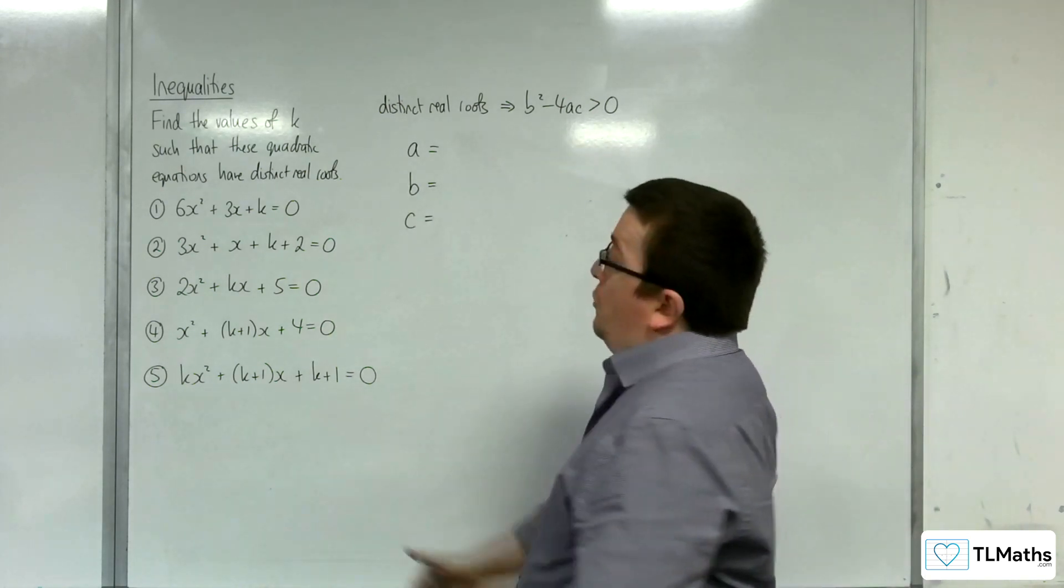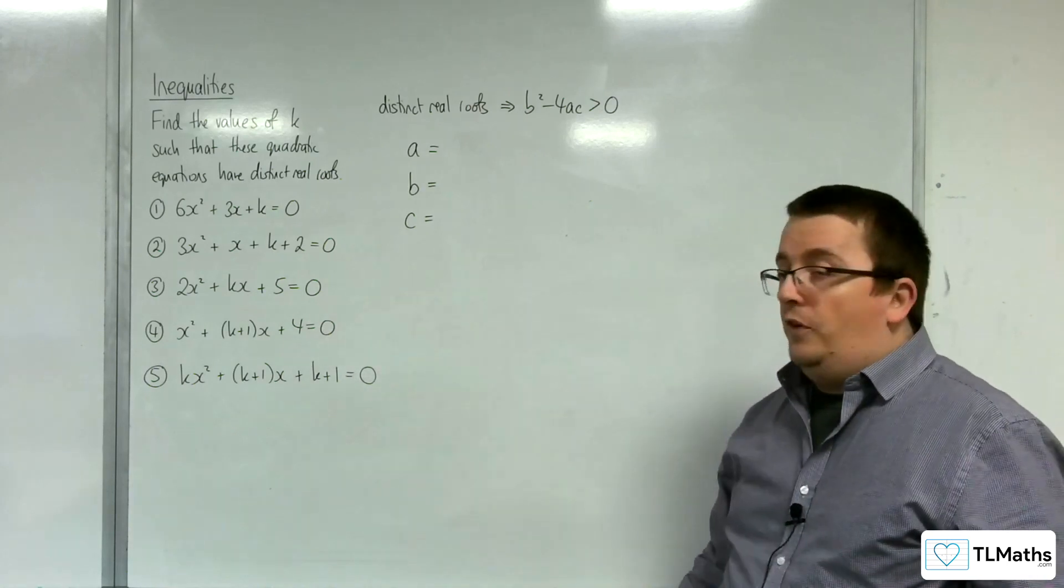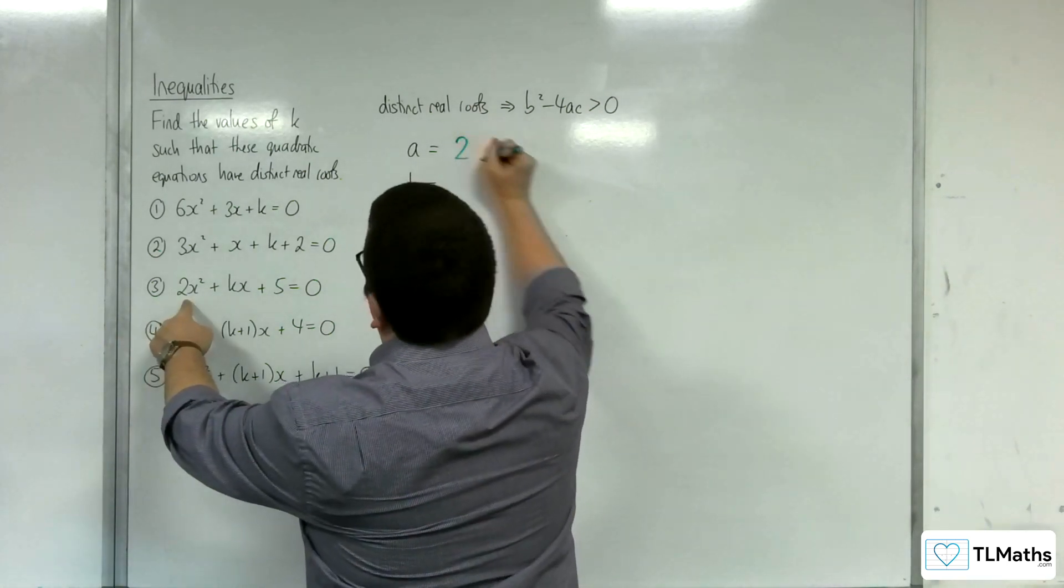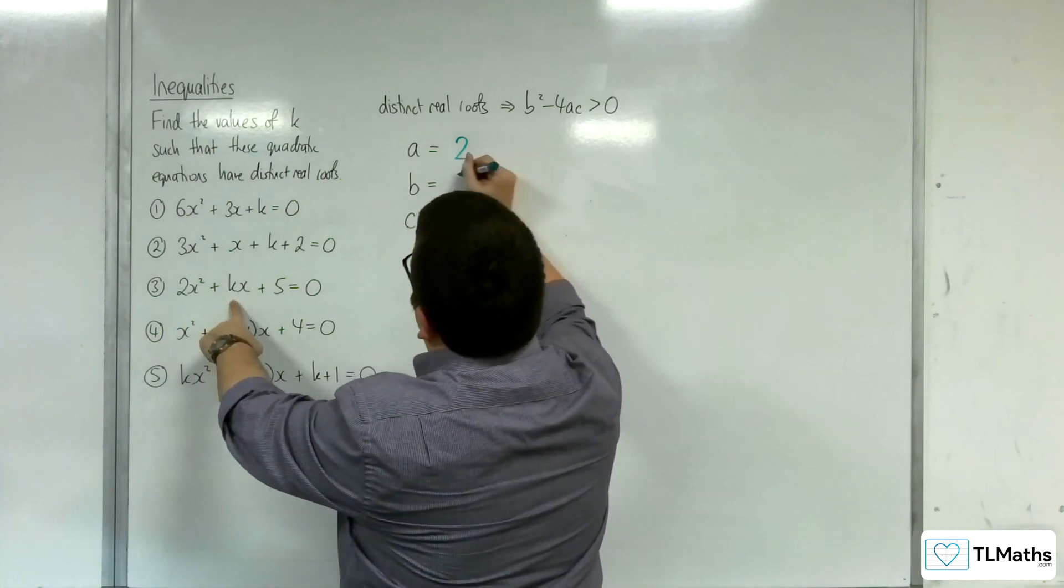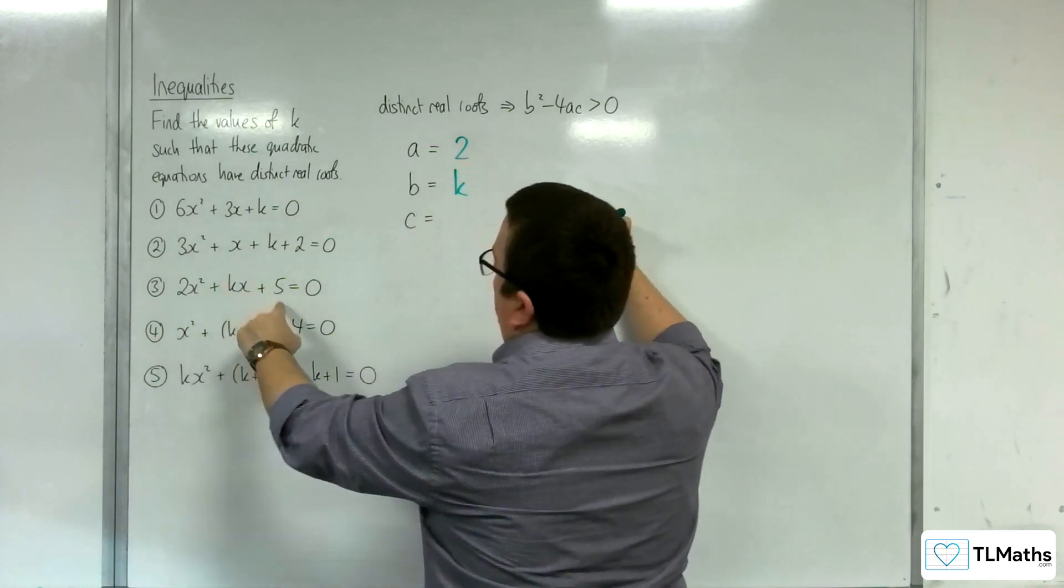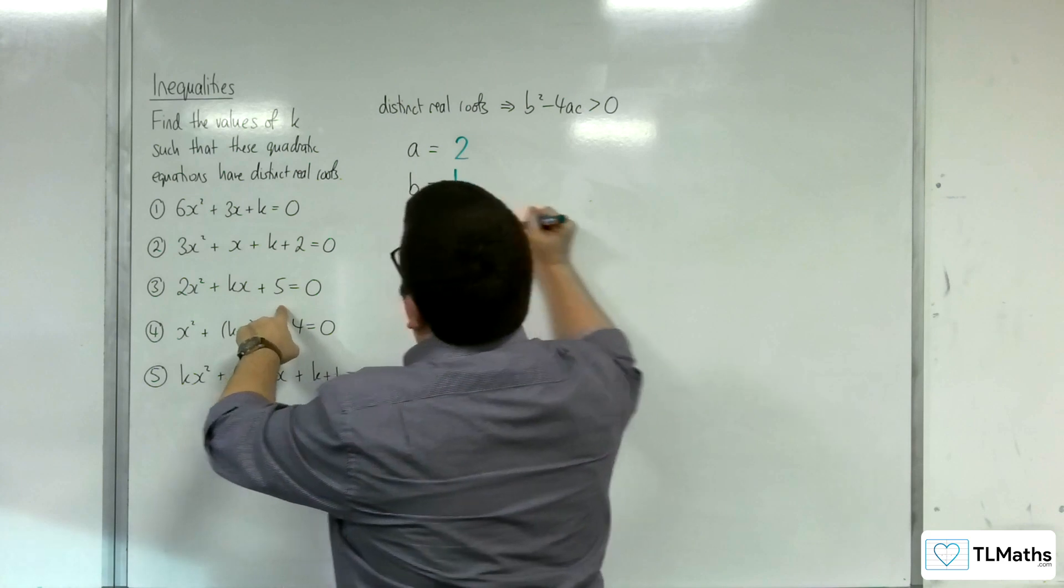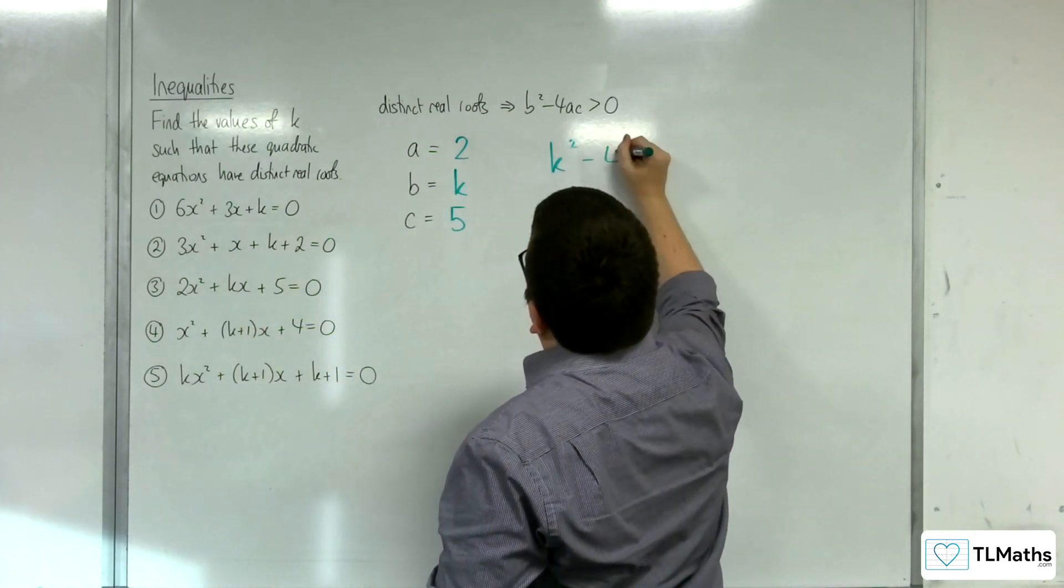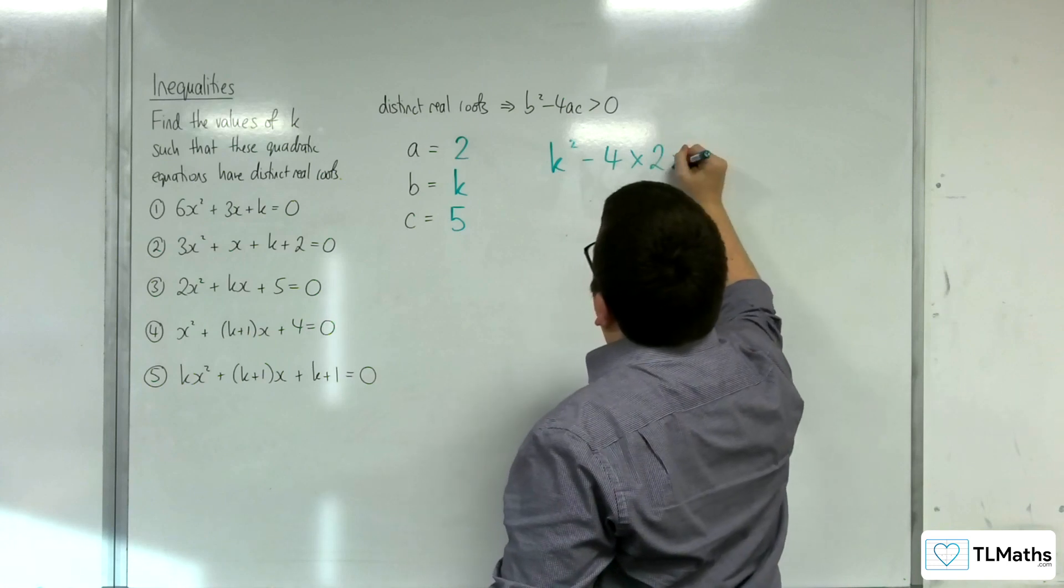Let's have a look at number 3. 2x squared plus kx plus 5 equals 0. So, a is the coefficient of the x squared, so 2. b is the coefficient of x, so k. And c is whatever is left over.